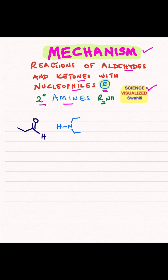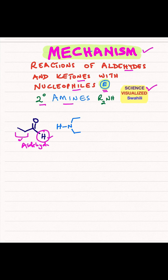Looking at our example here, when you have a hydrogen at that position, that is an aldehyde. So an aldehyde has an alkyl group on one side and a hydrogen at that position. A ketone will have an alkyl group on this side and an alkyl group on the other side as well.